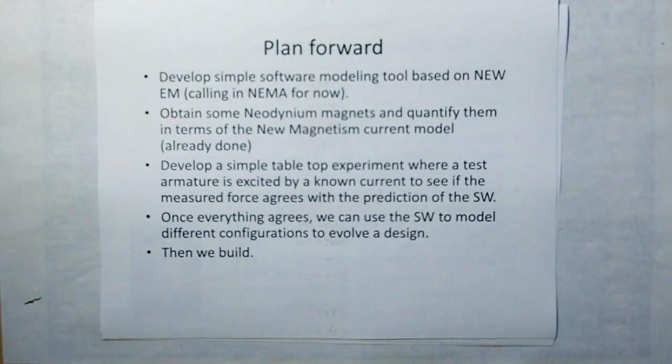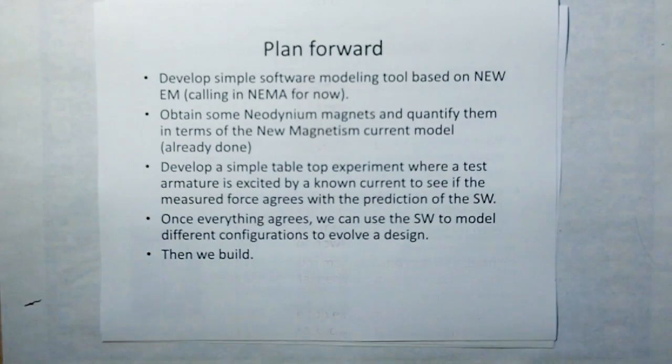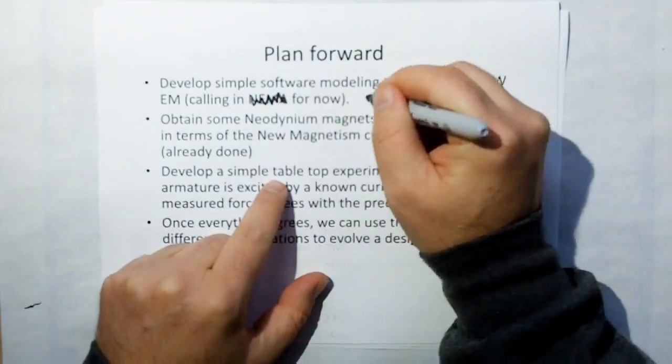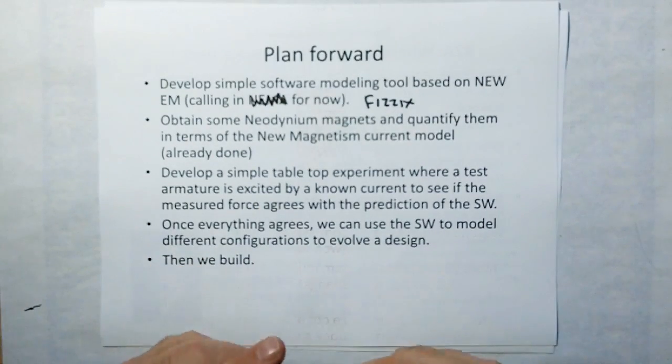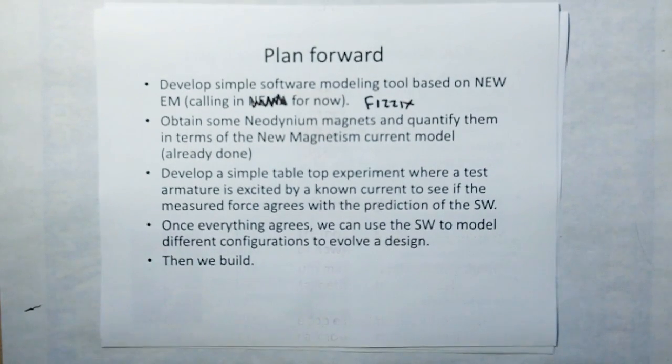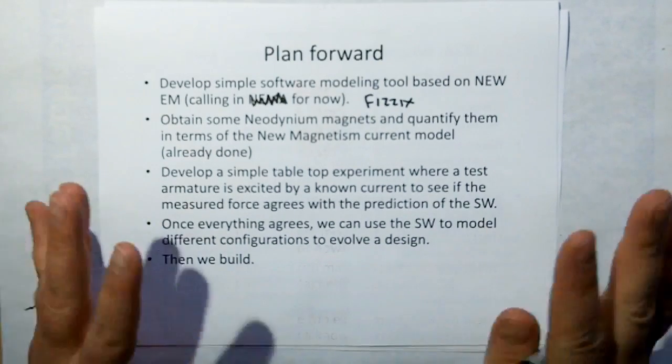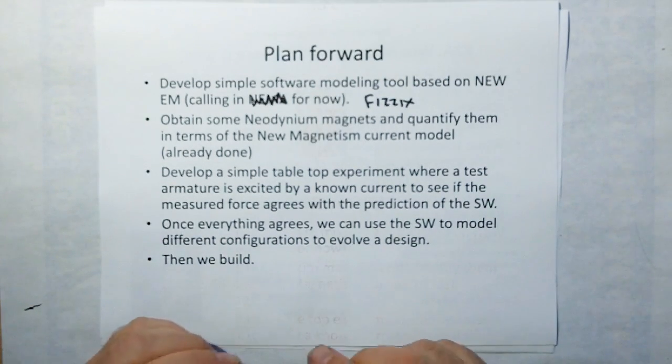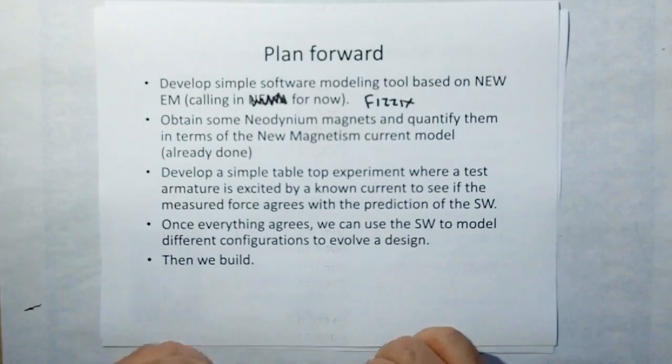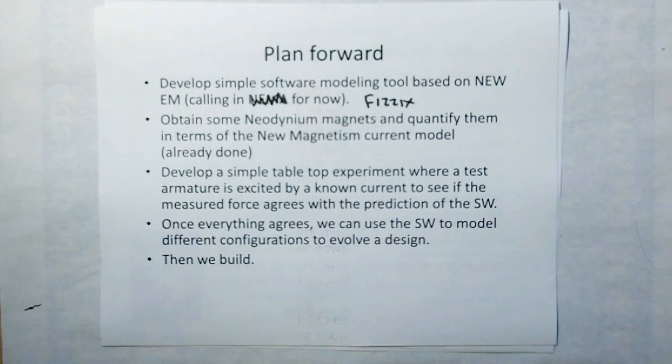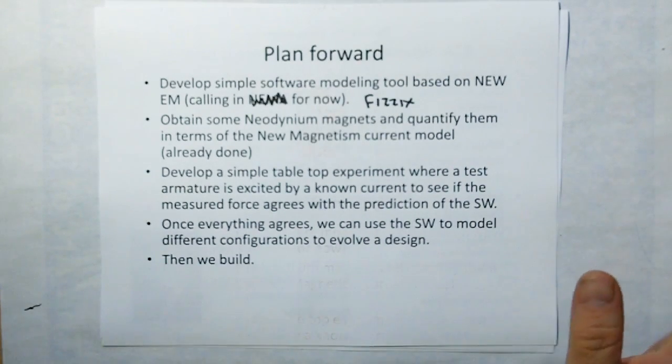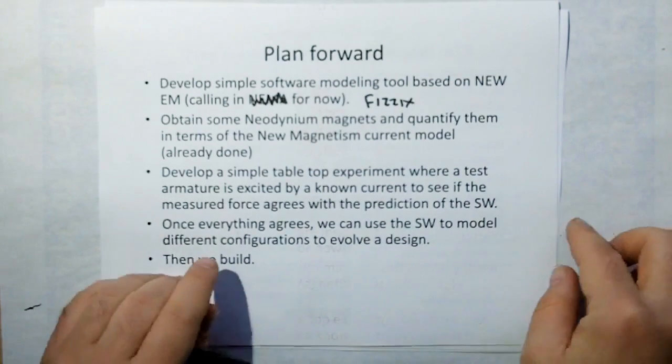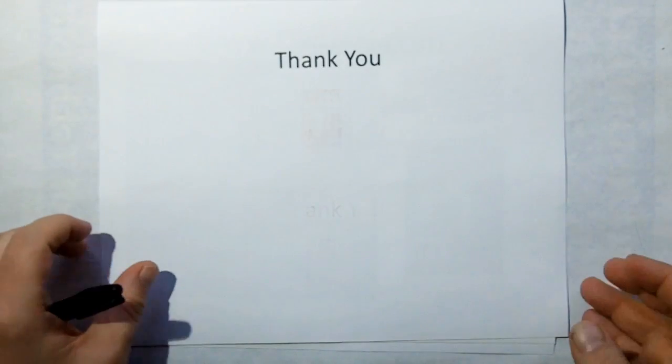So the plan forward is to develop simple software modeling based on new electromagnetism. I'm actually going to call it physics. Then we're going to obtain some neodymium magnets and quantify them using the new magnetism current model, but that's already been done. There's already a video out on that. Then develop a simple tabletop experiment where a test armature is excited by a known current to see if the measured force agrees with the prediction of the software. Once everything agrees, we can use the software to model different configurations to evolve a design, and then we build. Thank you very much.